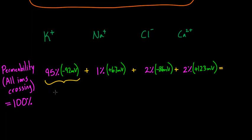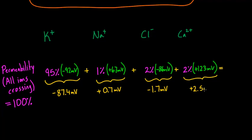I'm just going to quickly do the math on a calculator. Works out to negative 87.4 millivolts. And this bit right here, 1% of 67, that's easy. That's 0.7 millivolts, just 1%. Then this bit, 2% times negative 86 millivolts, that works out to about negative 1.7 millivolts. Finally, this part right here, for the calcium, ends up being positive 2.5 millivolts. If you add up all this stuff, what do you get? You get a total of negative 85.9 millivolts.